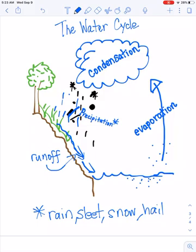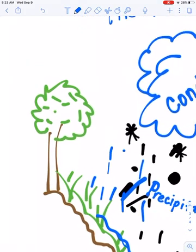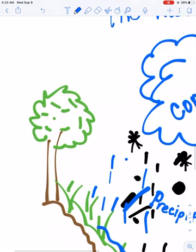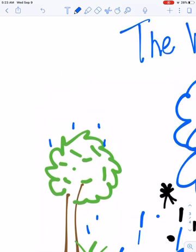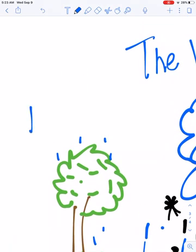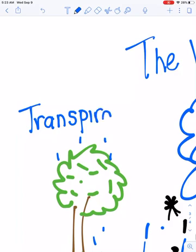Now there's one last thing we're going to add. And that's sometimes, like, I think it's usually at night, that plants give off water vapor into the atmosphere. And when they do that, when plants give off water vapor, that's called Transpiration. T-R-A-N-S-P-I-R-A-T-I-O-N.